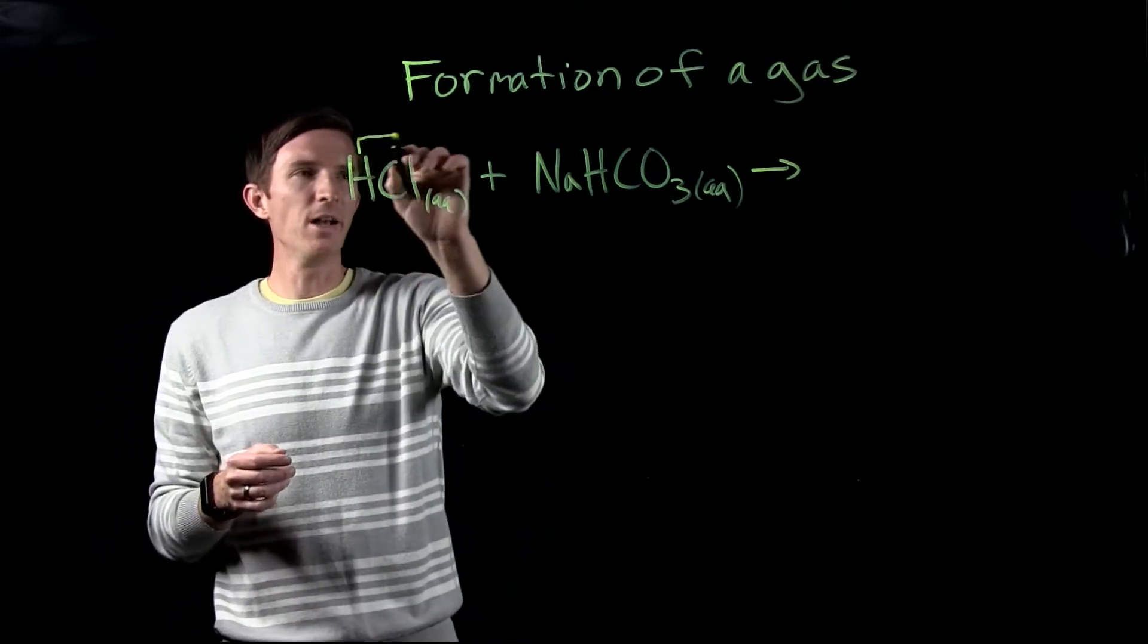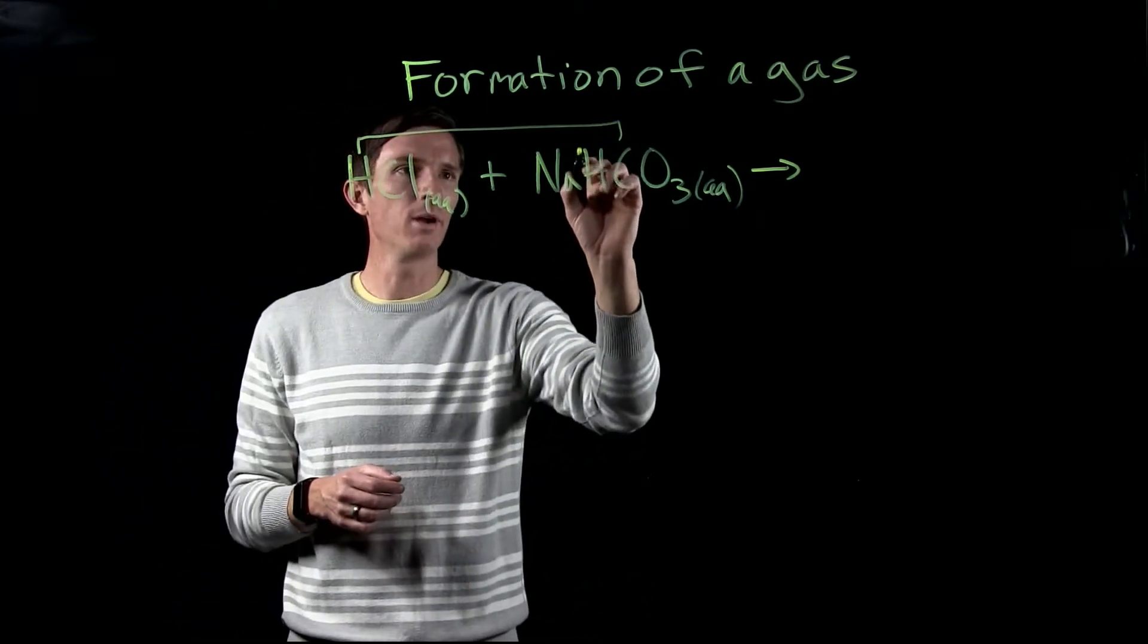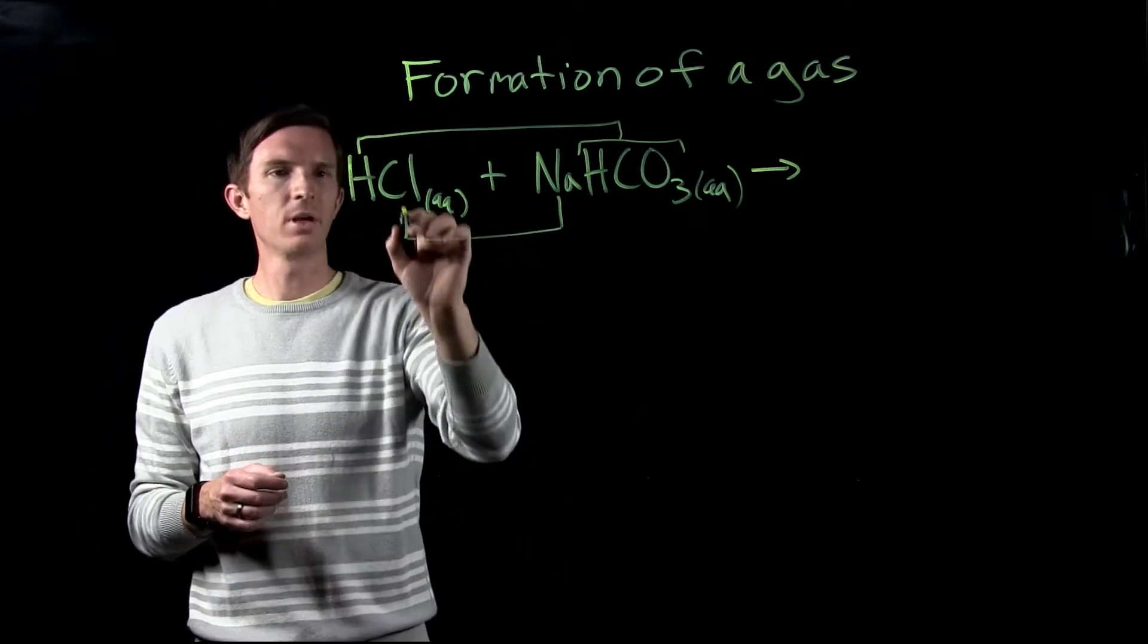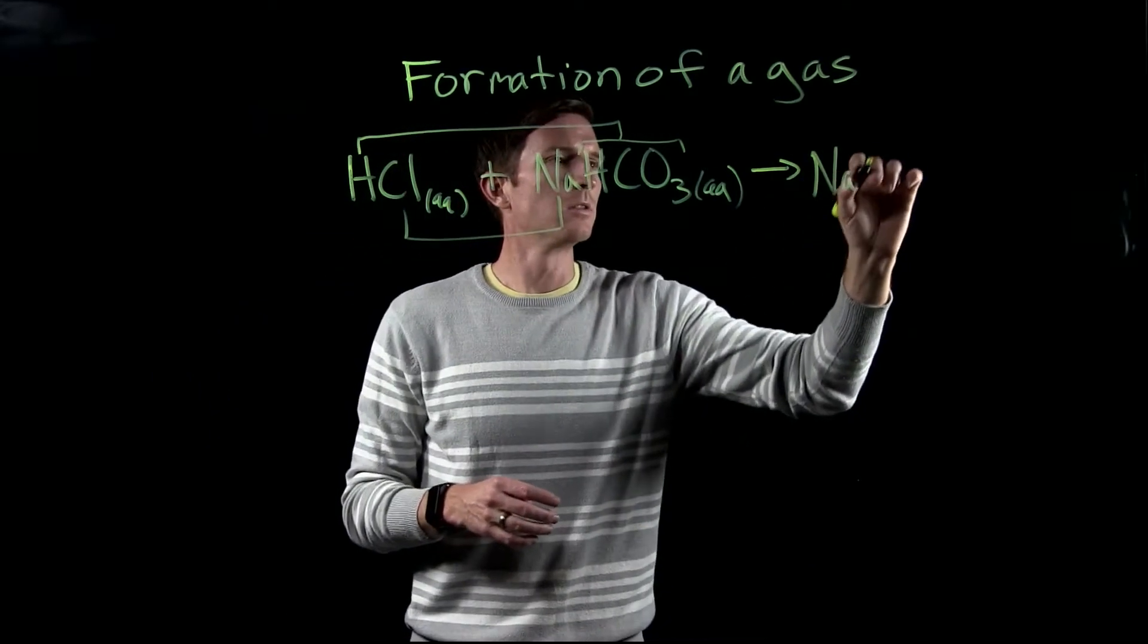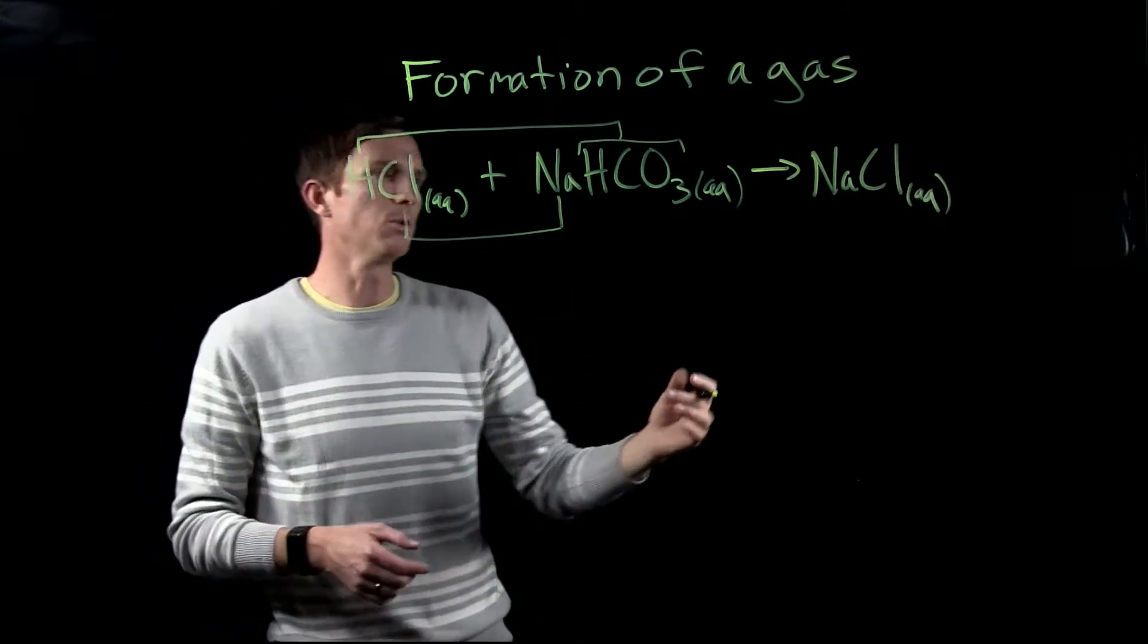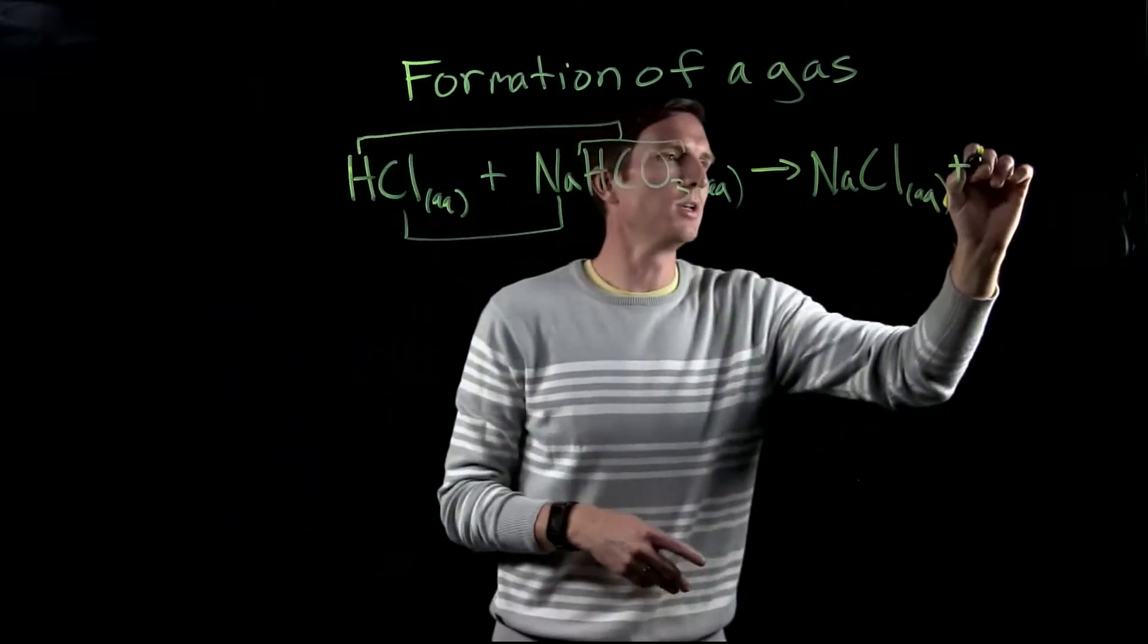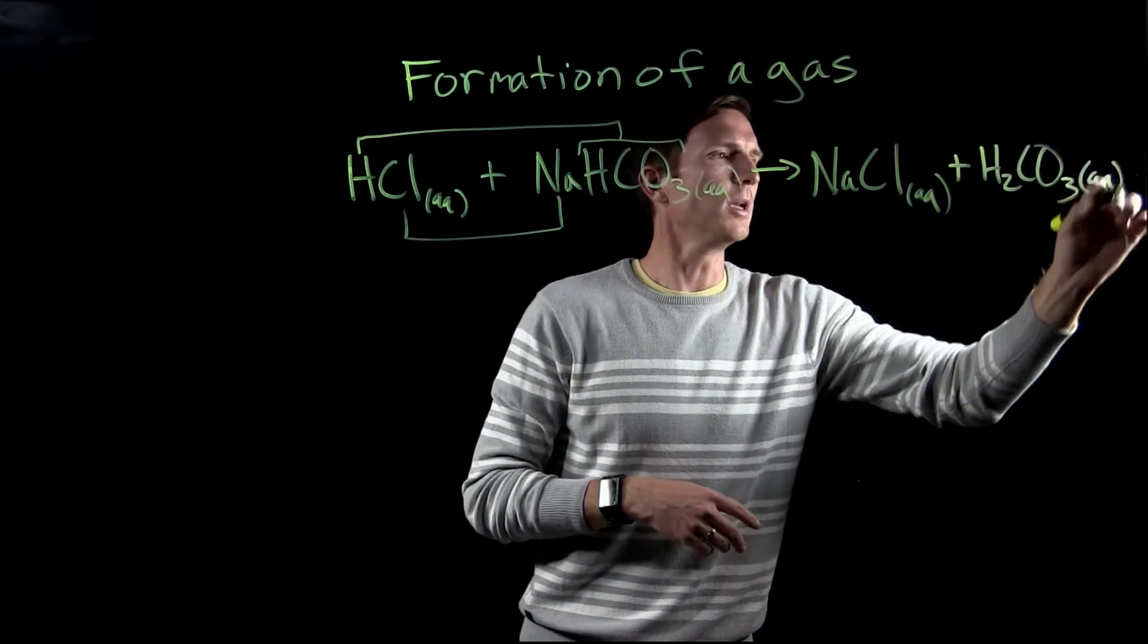So we're going to get hydrogen being added to our bicarbonate ion. This whole thing right here is an ion and then we would have our sodium combining with our chloride ion. So we get sodium chloride which is aqueous. Both of those ions would give us something that's soluble. And then we add hydrogen to the bicarbonate ion, and we end up getting H2CO3.